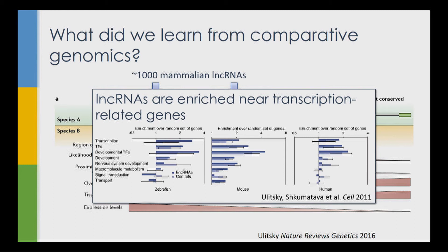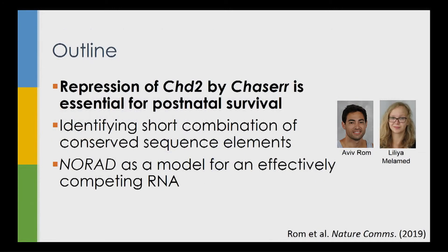If you look at where conserved lncRNAs are found in the genome, many are enriched around genes that are themselves involved in transcription — developmental transcription factors or genes involved in other parts of the transcriptional process, such as chromatin modifiers. The first story I'd like to tell today is about one such conserved lncRNA associated with one of these transcription-associated genes, recently published.